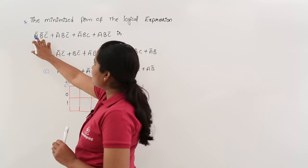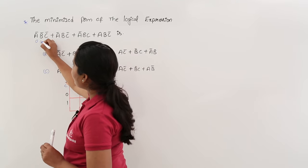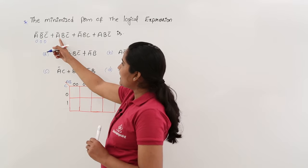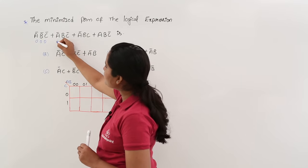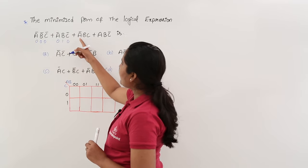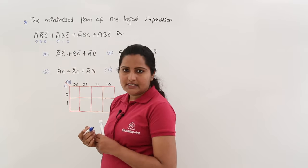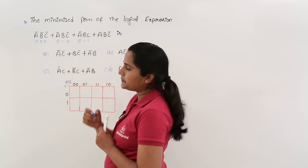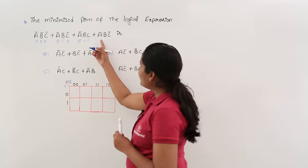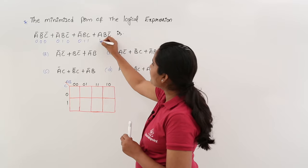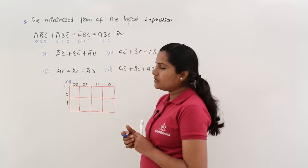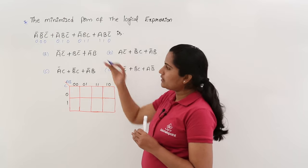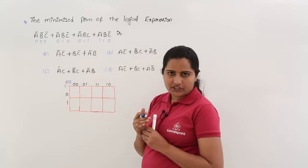See here: ā·b̄·c̄ is decoded as 0 0 0; ā·b·c̄ is 0 1 0; ā·b·c means 0 1 1; and a·b·c̄ means 1 1 0. Now I have completed the decoding of binary equivalents for each product term in this expression.